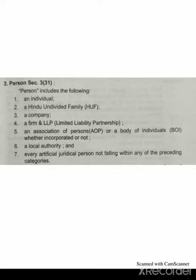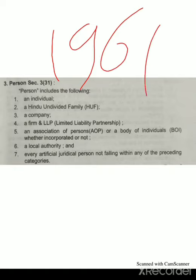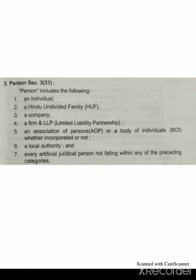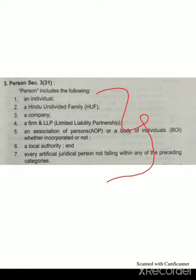The third basic term is 'person.' Under the Income Tax Act 1961, certain categories are treated as a person: an individual, a HUF (Hindu Undivided Family), a company, a firm and LLP (Limited Liability Partnership), an Association of Persons (AOP) or a Body of Individuals (BOI) whether incorporated or not, a local authority, and every artificial juridical person not falling under any of the preceding categories. These seven categories are simply called a 'person' under the Income Tax Act 1961.